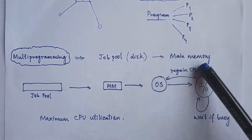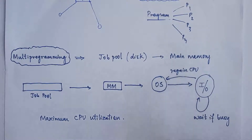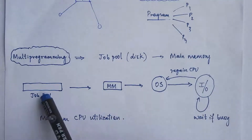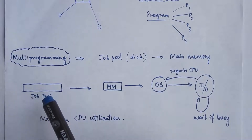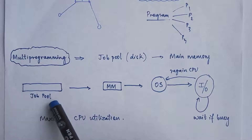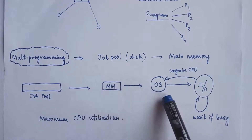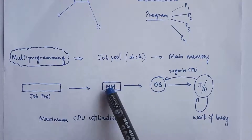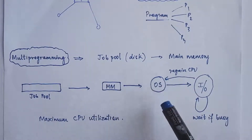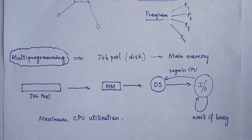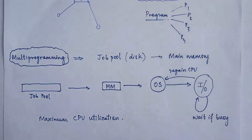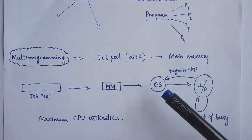Once the processes are in the main memory, the operating system selects a process from the main memory so that it can gain the CPU for execution. The operating system provides access to the CPU for that particular process. Now the process has gained CPU so it carries on its execution — the CPU is now executing that process — and while executing, the process might require some IO devices.